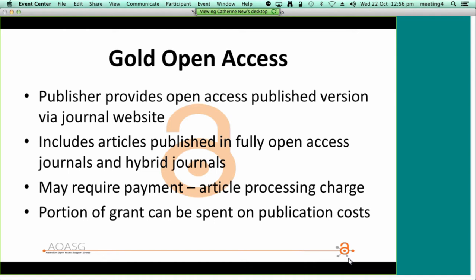Gold open access also includes hybrid journals, which are subscription journals that provide an option for individual articles to be made open access via the journal website if a fee is paid. Hybrid open access fees are generally higher than those charged by fully open access journals. In most cases when an article processing fee has been paid, the author can also upload the published version to an institutional repository or personal web page, though the terms of the publishing agreement need to be read to confirm this. Where uploading is not possible, the repository can hold the publication metadata plus a link to the open access full text on the journal website.